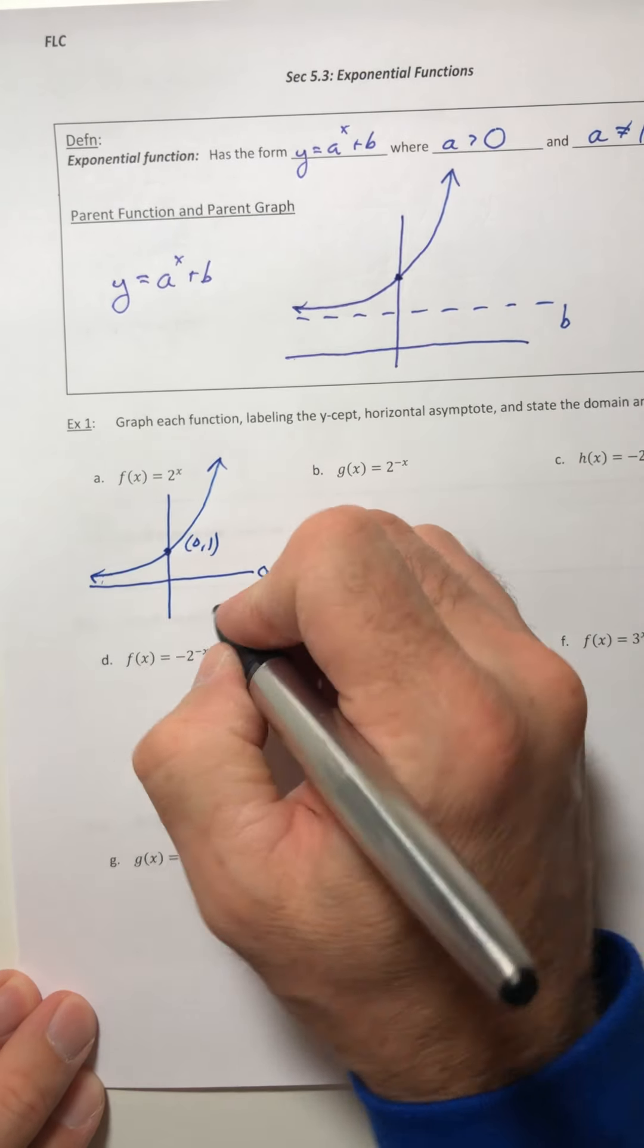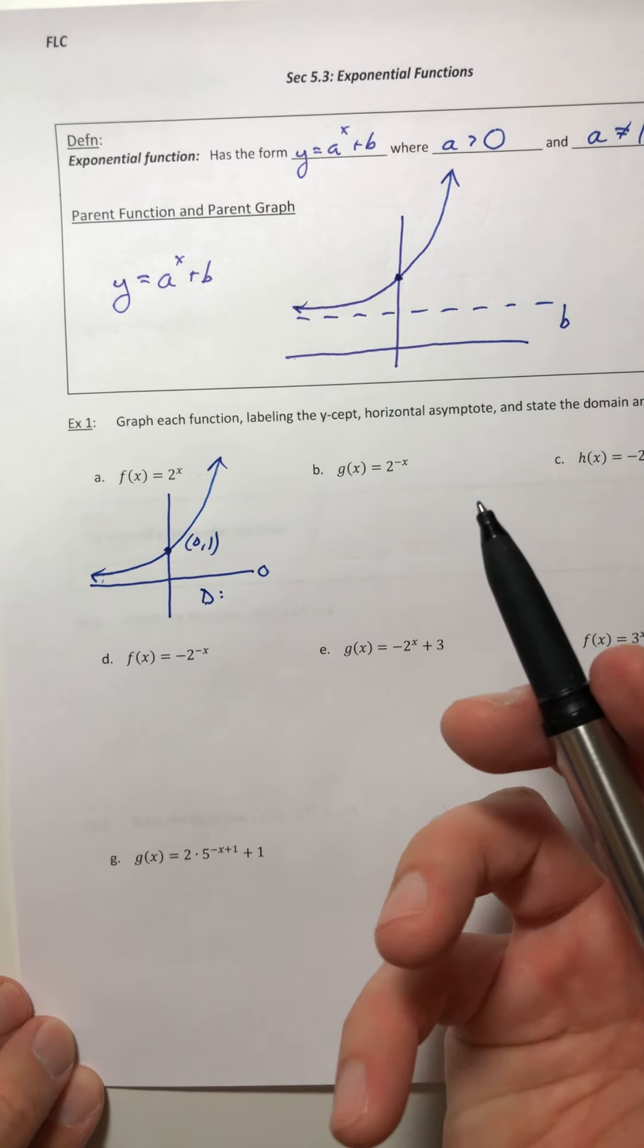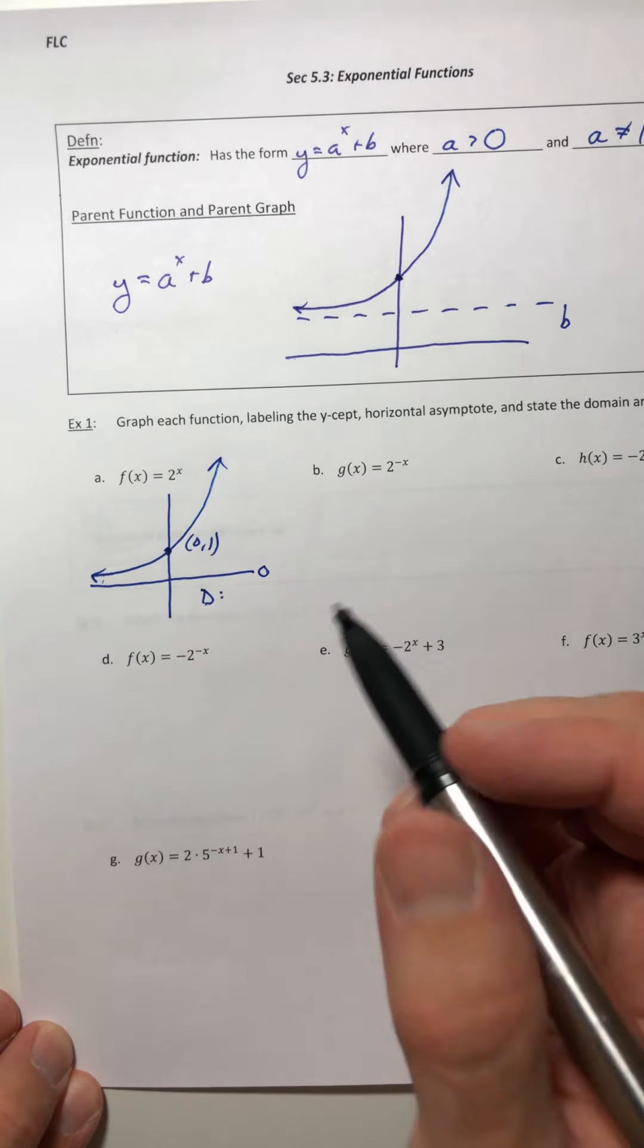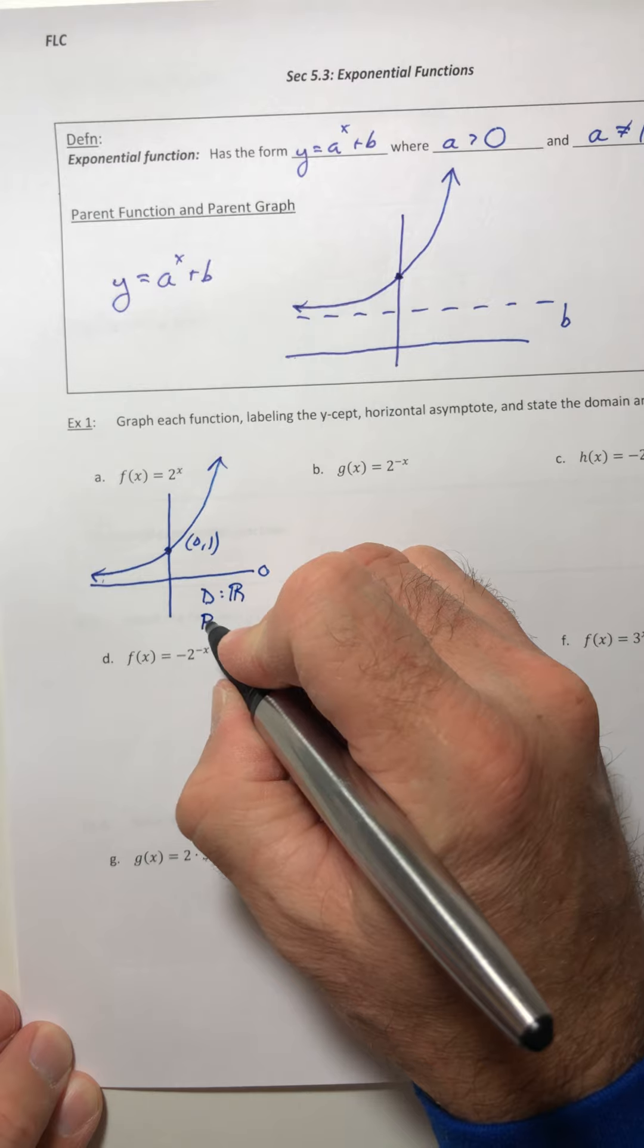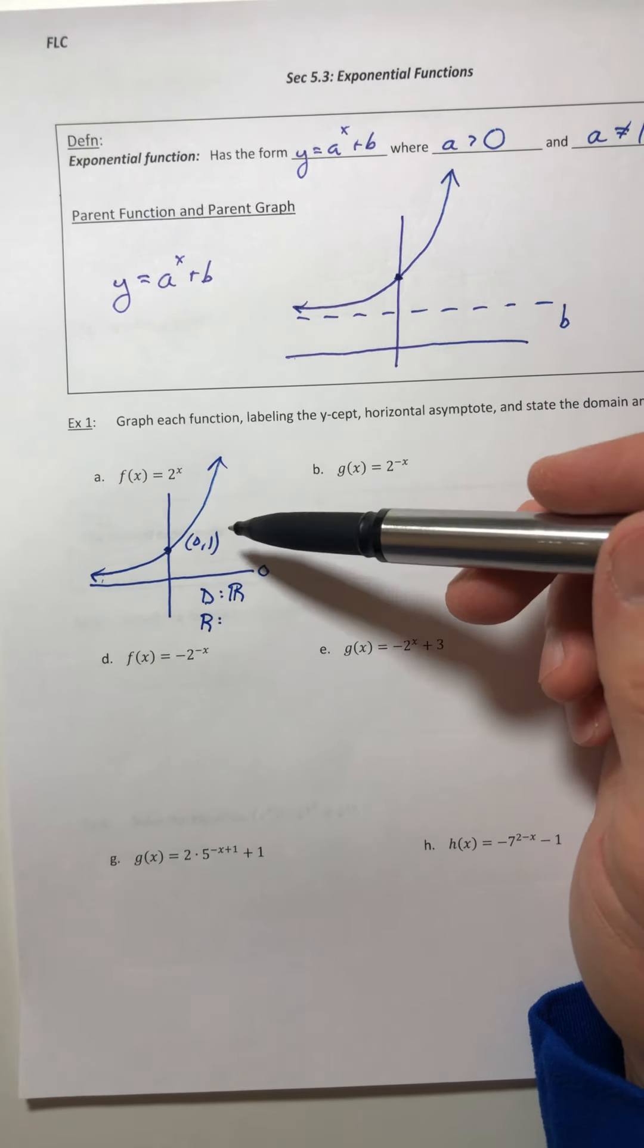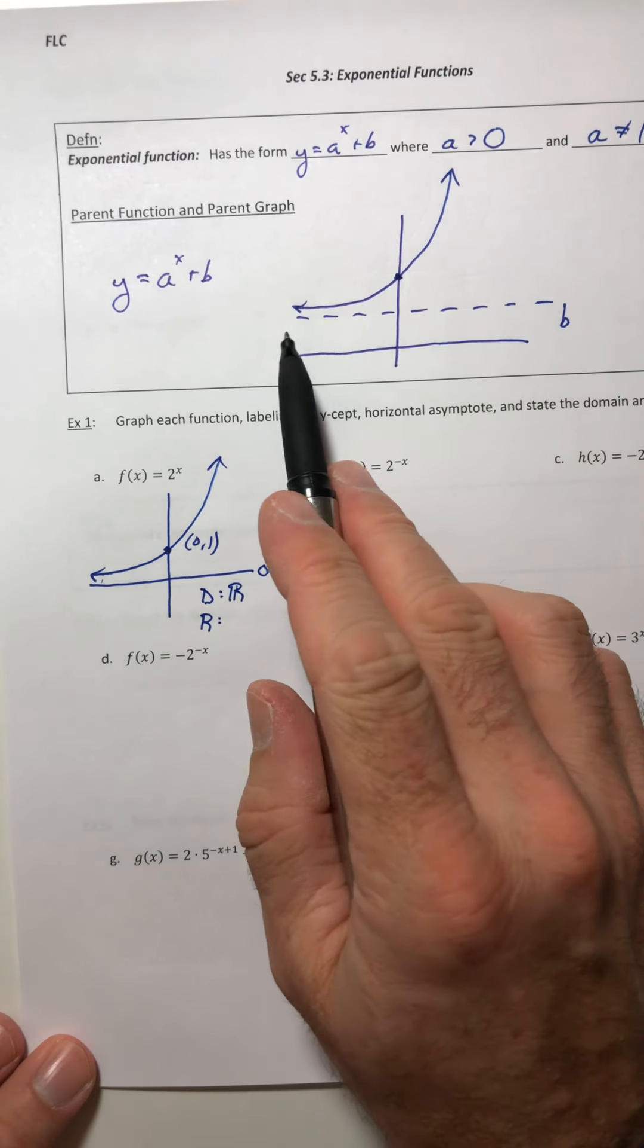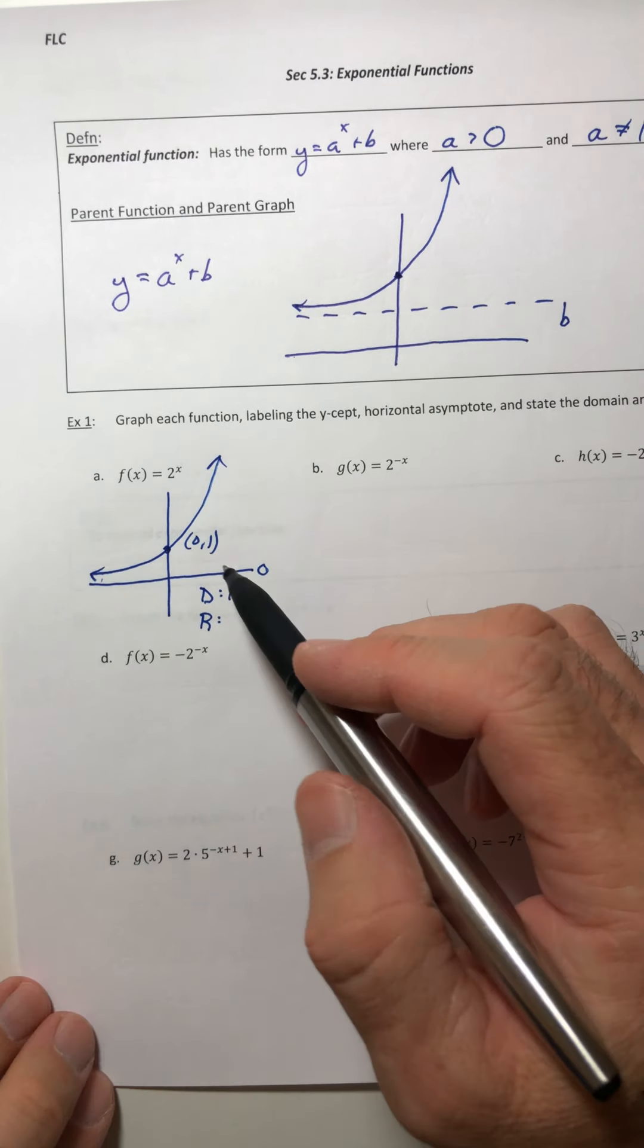The domain and the range. The domain, there's no x in a denominator, there's no x in a square root, so you can plug anything you want in for x. So all reals. But if you look at your graph, the range is not all reals. It kind of left out a big section, and that was anything below the x-axis. That's what your horizontal asymptote does. It's like your boundary line for your graph. So for this curve it is zero to infinity, not including zero.